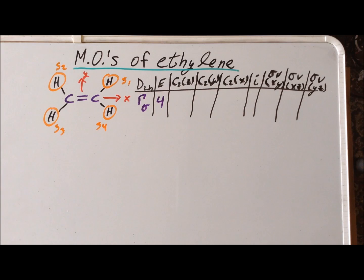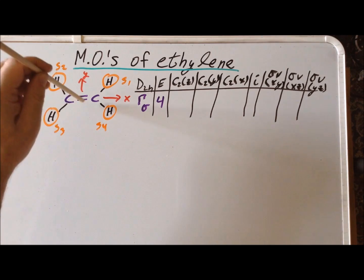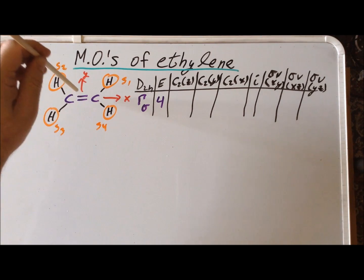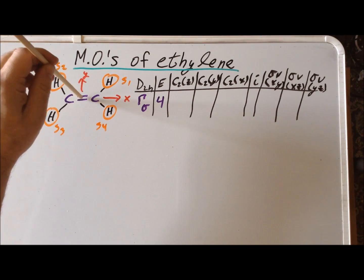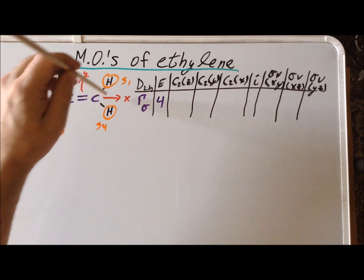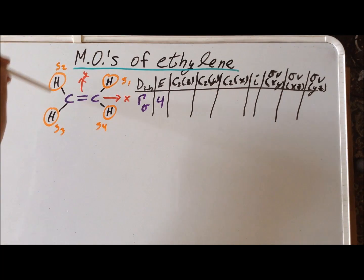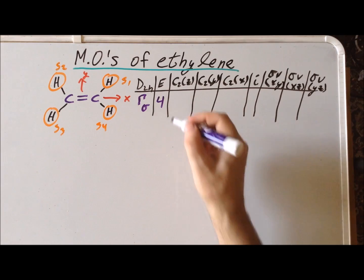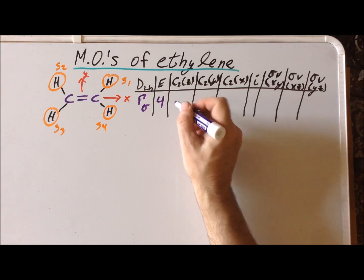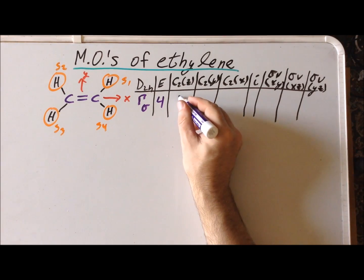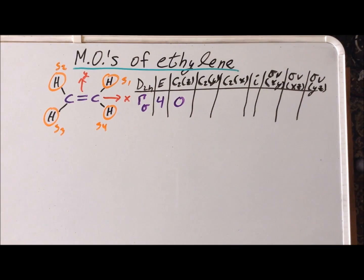For C2z, this is the axis of this stick here, and that takes S1 to S3, S2 to S4. So we see that all of the orbitals move, so none stays put. So our character is going to be zero.